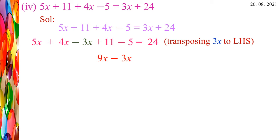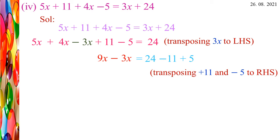We get 5X + 4X - 3X + 11 - 5 = 24. Transposing 3X to the LHS, it becomes -3X. Now adding values: 5X + 4X gives 9X, so 9X - 3X + 11 - 5 = 24. Transposing +11, it becomes -11; transposing -5, it becomes +5. So the equation is 9X - 3X = 24 - 11 + 5. Subtracting: 9 - 3 = 6, so 6X = 24 - 11. Different signs: subtract and replace the greater number sign. 24 - 11 = 13, and 13 is positive. So 6X = 13 + 5 = 18.